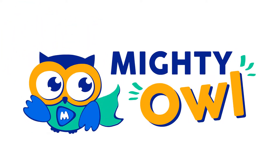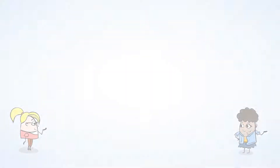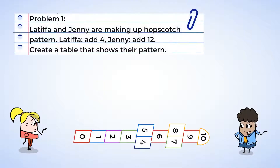Hello, this is Mighty Owl. What a wonderful day outside. Let's join Latifah and Jenny. The girls are making up their own hopscotch patterns. They're each using 11 boxes and numbering them according to their different patterns. Both Latifah and Jenny put a zero in their first box. Latifah will add four every time to fill her boxes. Jenny will add 12 each time to get to the next number. Let's help them create a table that shows each one's pattern.